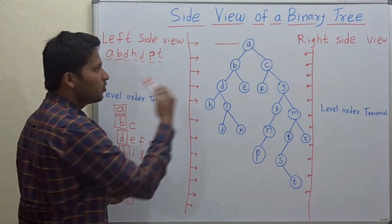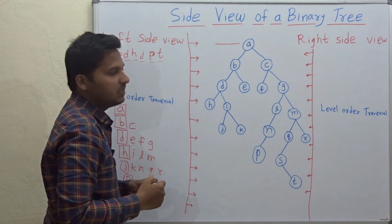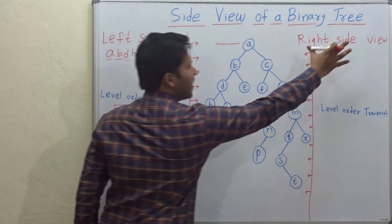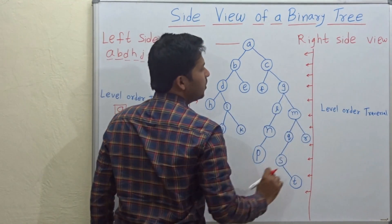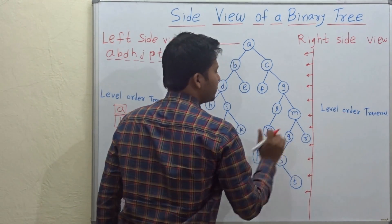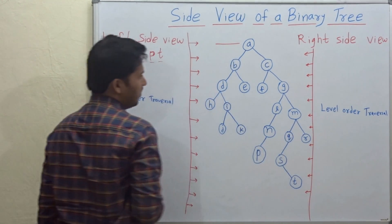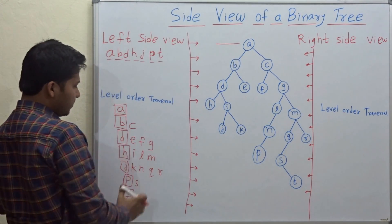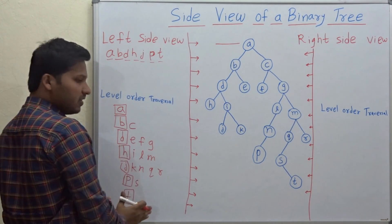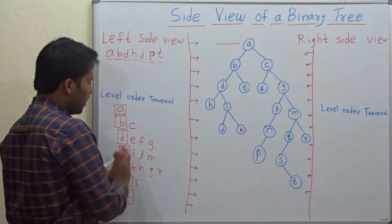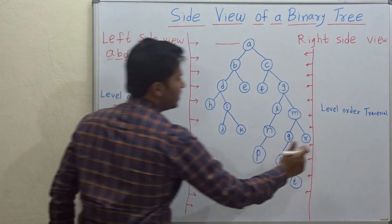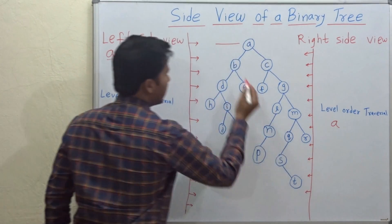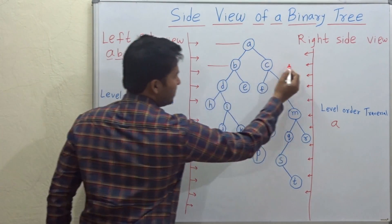Now let's go to the right side view. For the right side view we need level order traversal as well, so the level order traversal of this binary tree will remain the same. I will just copy it here — the level order traversal is A, then B, C.